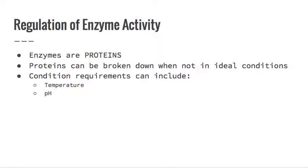Proteins can be broken down when not in ideal conditions — that's why we have things like hypothermia that are so dangerous and deadly. So the condition requirements for enzymes can include temperature and pH; they have to have the ideal temperature and pH settings.